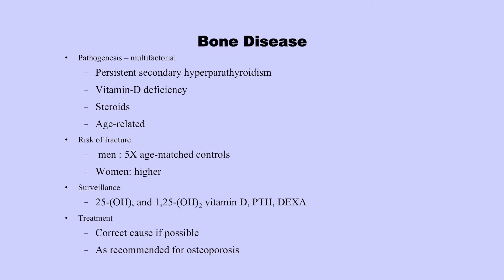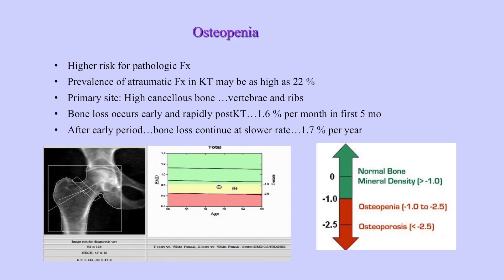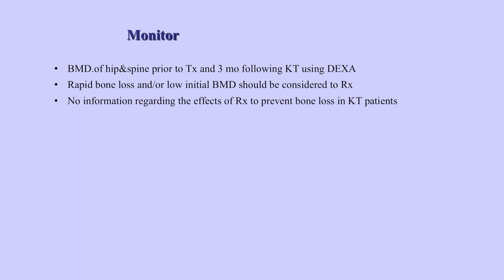Bone disease is multifactorial — it's due to persistent hyperparathyroidism from dialysis, steroid use, and age-related factors. The risk of fractures is high compared to the non-transplant population. For surveillance, you can check vitamin D levels, PTH, and DEXA scans, and try to correct the cause if possible. Osteopenia is very prevalent, with fracture prevalence in kidney transplant as high as 22%, with vertebral and rib involvement. Bone loss occurs early and rapidly post-transplant — 1.6% per month in the first five months, then approximately 1.7% per year as steroids are reduced.